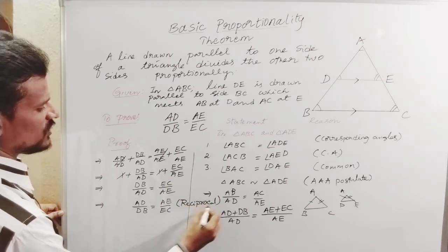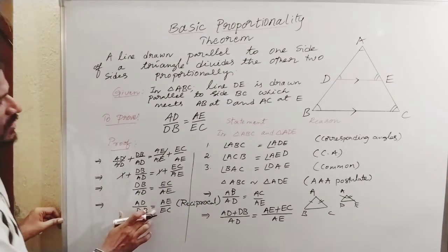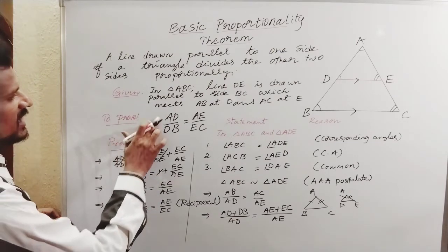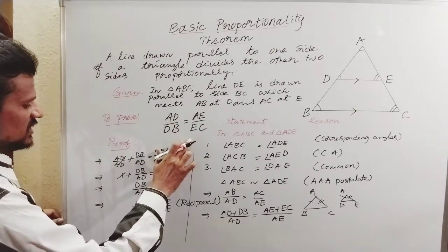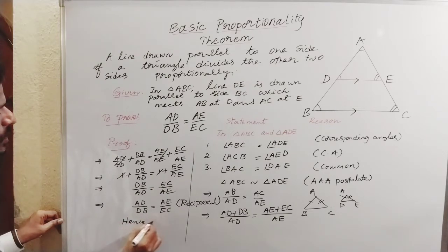Now observe here: AD/DB is equal to AE/EC, which is what we had to prove. Hence proved. Thank you.